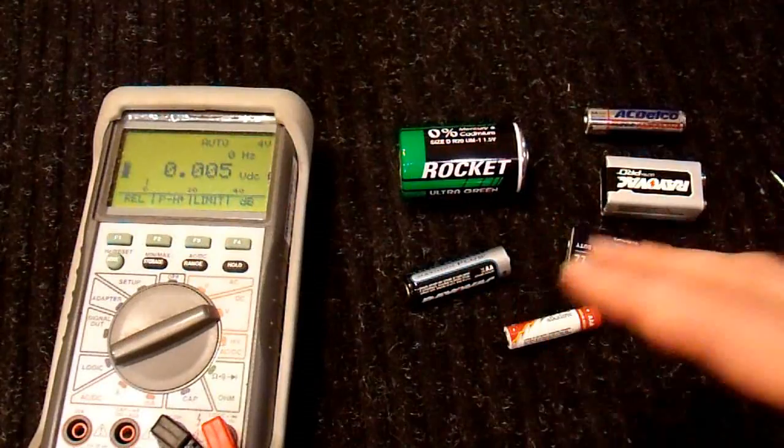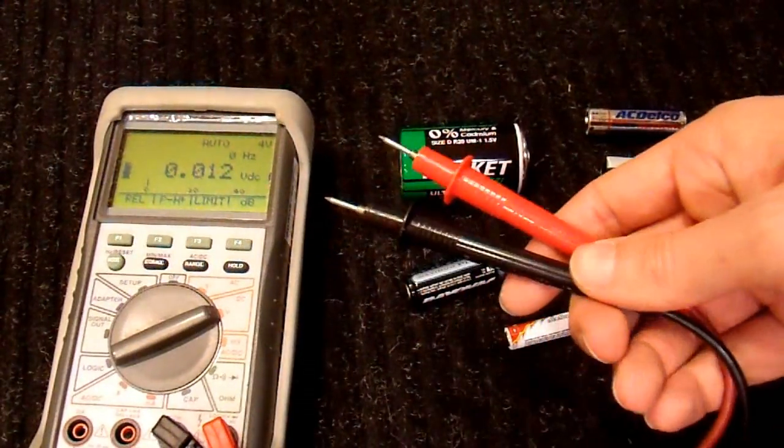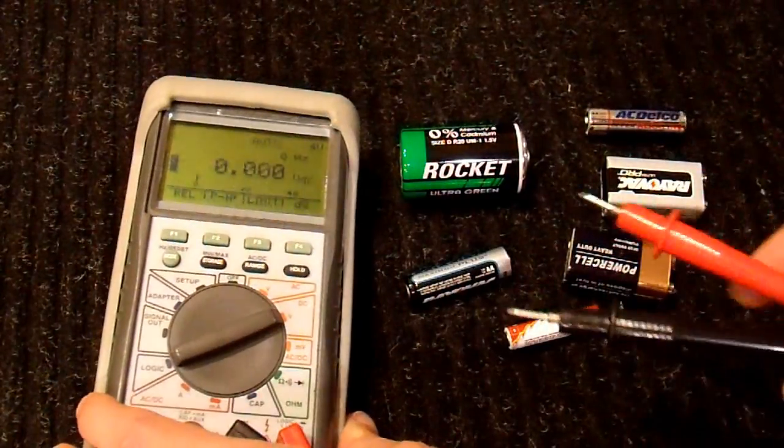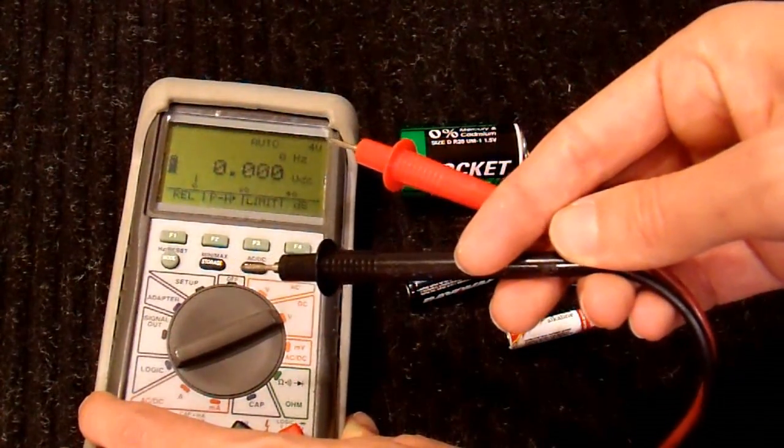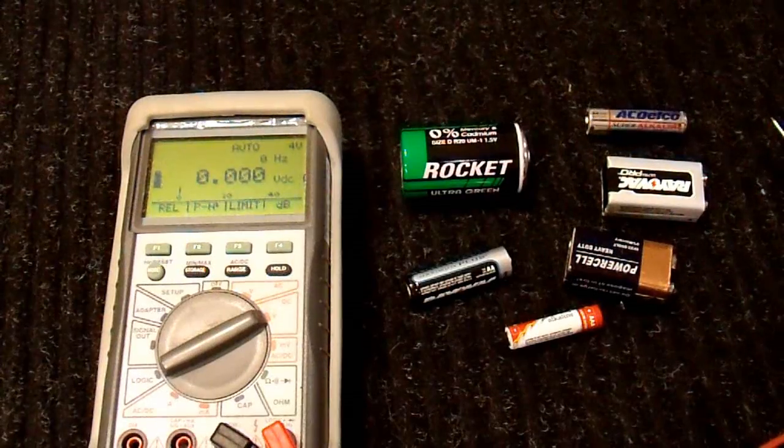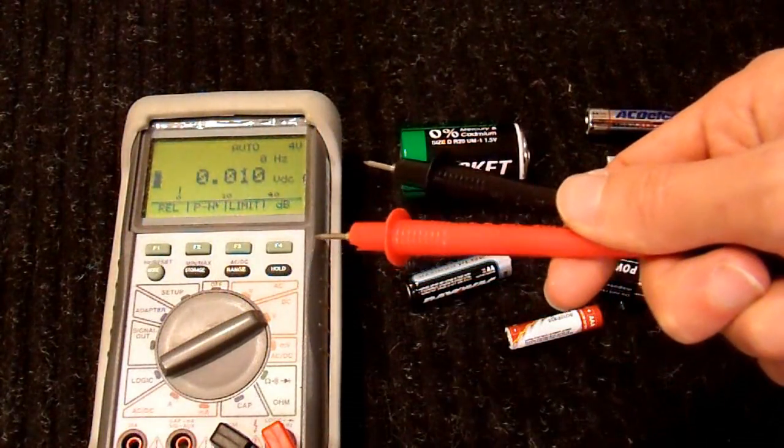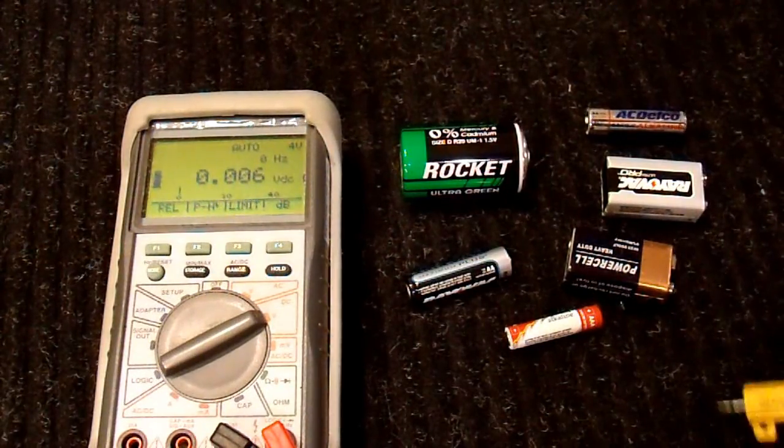I'm going to show you how you can actually test these batteries with a multimeter. Now you can buy a battery load tester. They're pretty cheap and you can buy them just about anywhere. And they do the same basic procedure as I am going to do here. They just integrate it inside the tester. And to properly check batteries, you need both a voltage meter and a known load. And there's lots of ways to get a known load. I'm going to use this method.